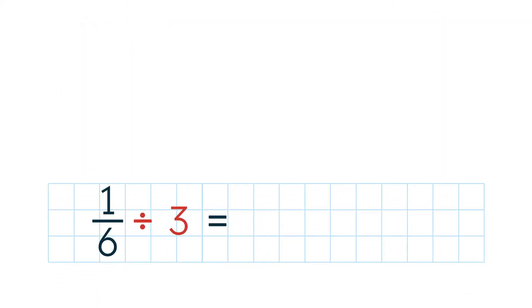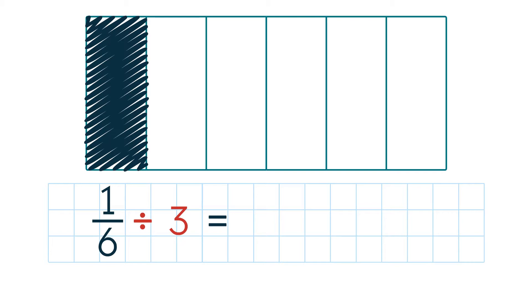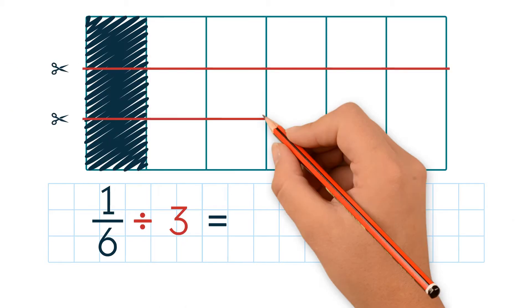Let's do a similar problem: 1 6th divided by 3. Our dividend is a fraction, and the divisor is a whole number. Let's draw a model to help us solve. We divide 1 rectangle into 6 equal parts. 1 of the 6 parts represents 1 6th. We divide the model into 3 equal parts, like if we use scissors to cut the model.